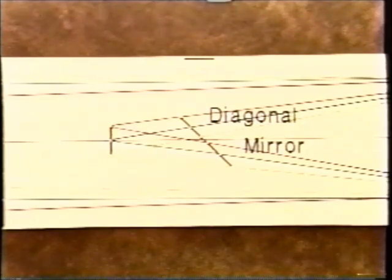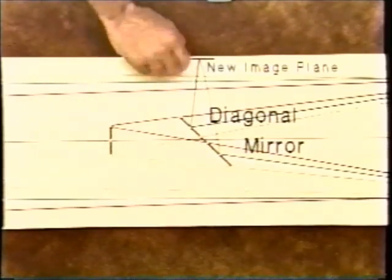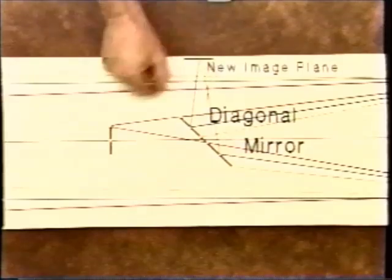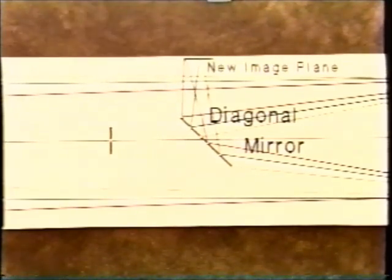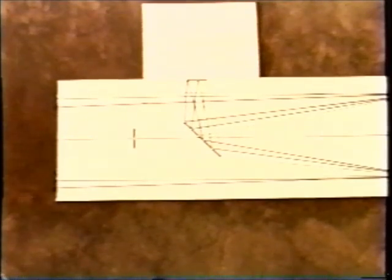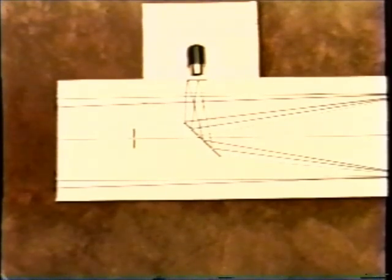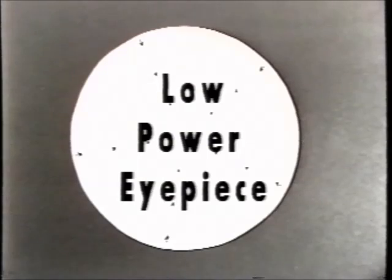The diagonal mirror reflects the light from the primary mirror into the focuser, which we can conveniently demonstrate in this mock-up. Who says you can't bend light? Because of the important role of the diagonal in collimation, it will play a major part in this video. Your eyepiece is used to magnify the star images formed at the image plane by the primary mirror.